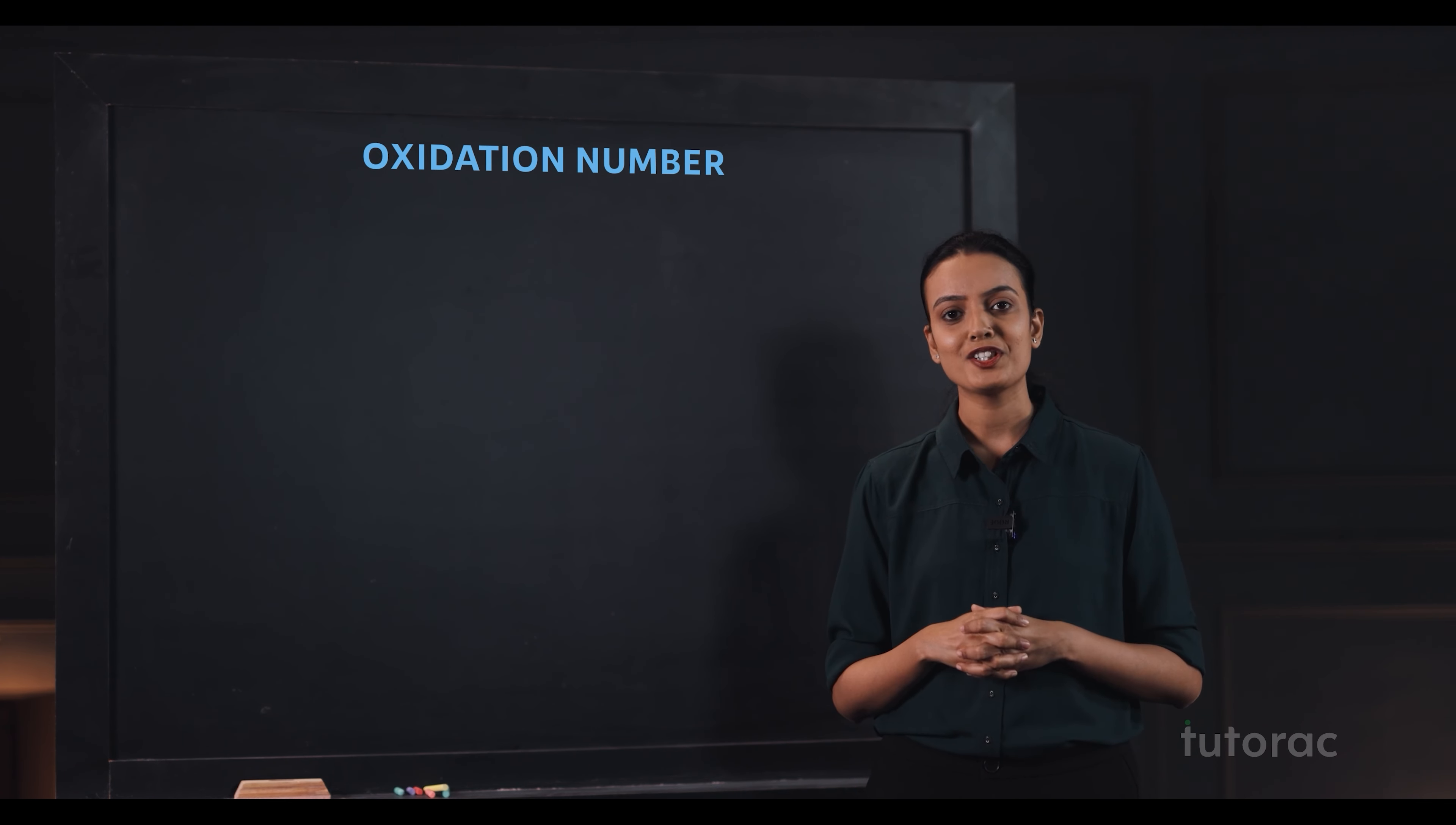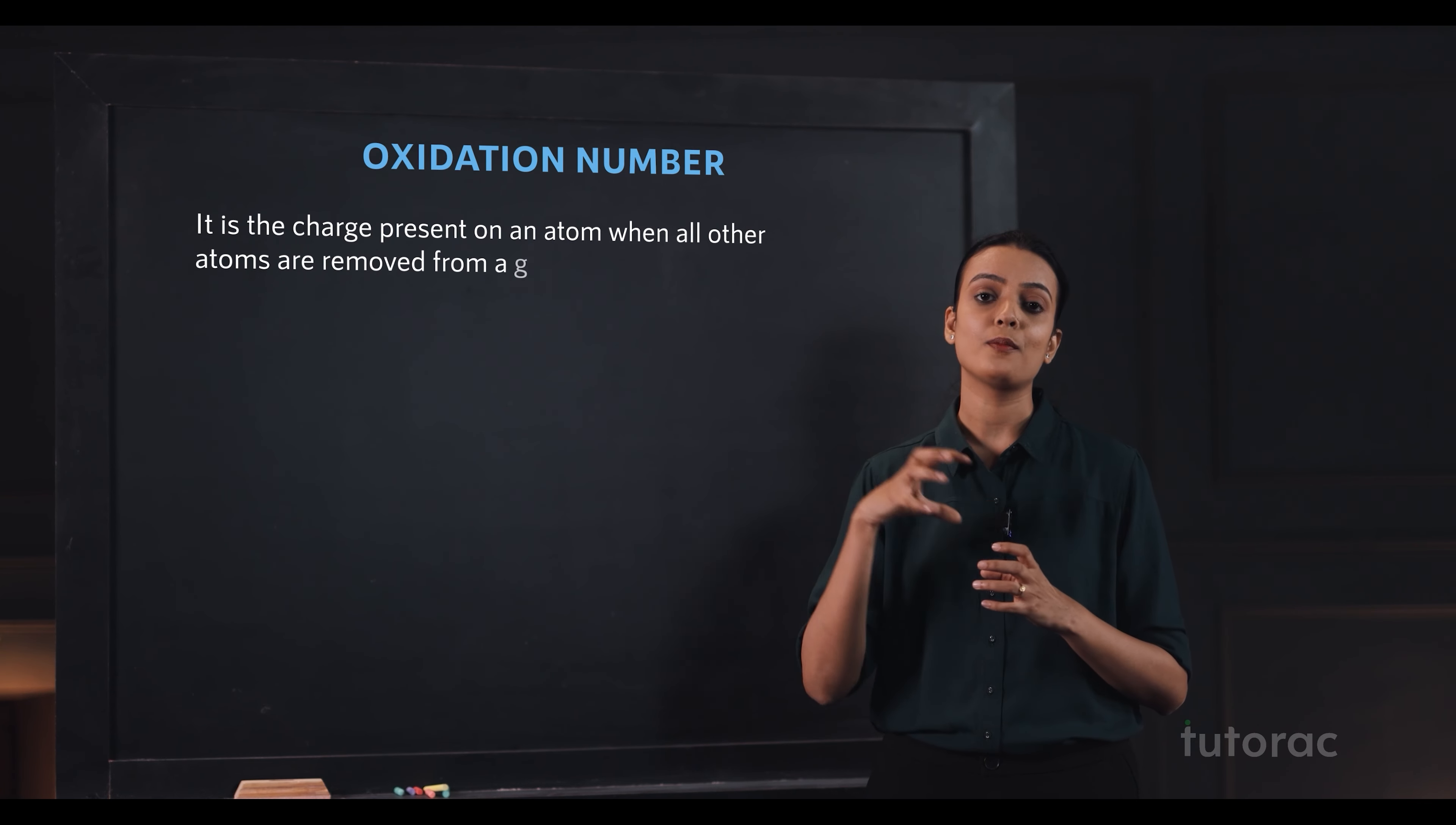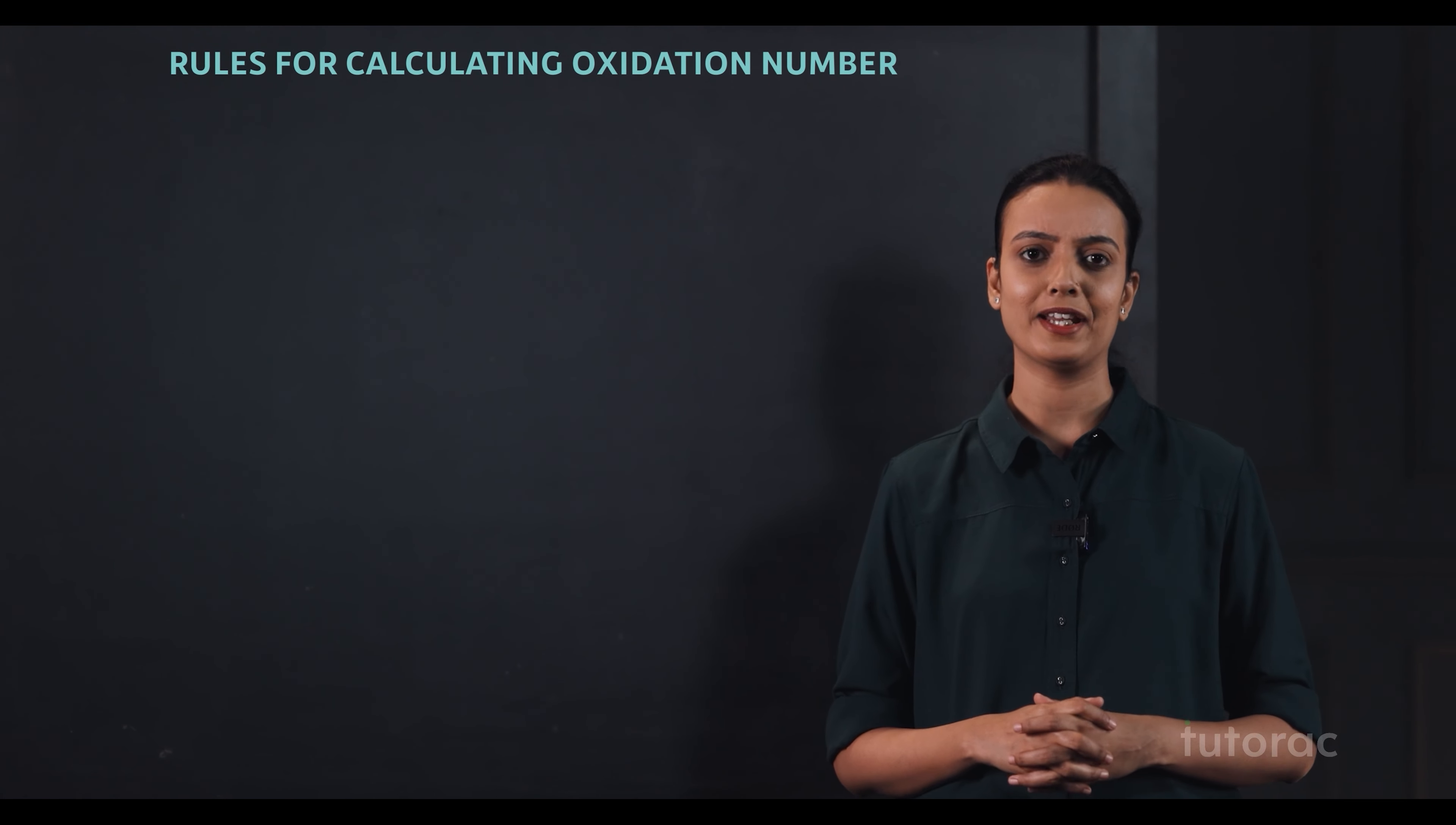So, oxidation number is nothing but a charge present on an atom when all other atoms are removed from the given compound as ions. For calculating oxidation numbers, we have to follow some simple rules. Let's have a look at them.